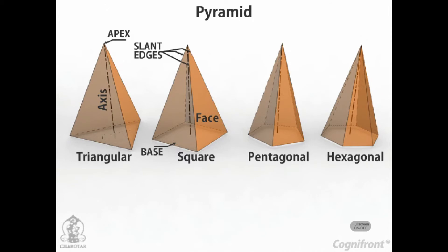Its faces are all equal isosceles triangles. Oblique prisms and pyramids have their axis inclined to their bases. Prisms and pyramids are named according to the shape of their bases as triangular, square, pentagonal, hexagonal, etc.